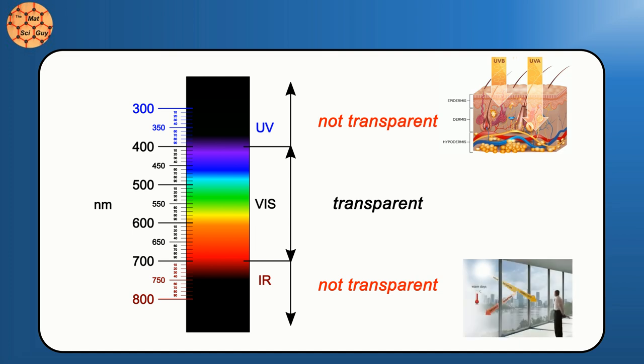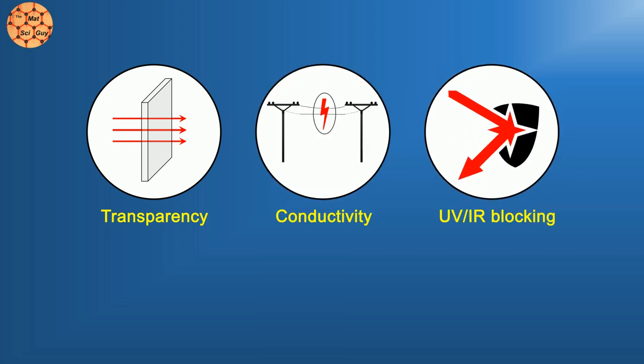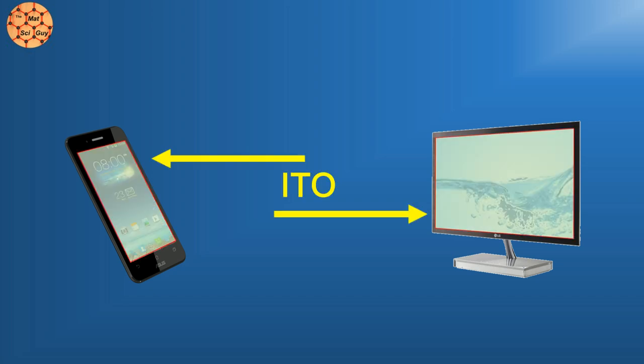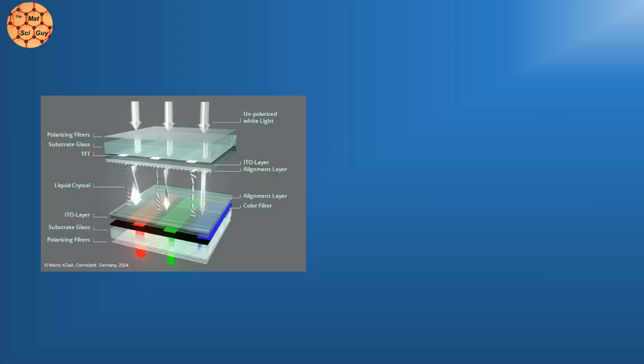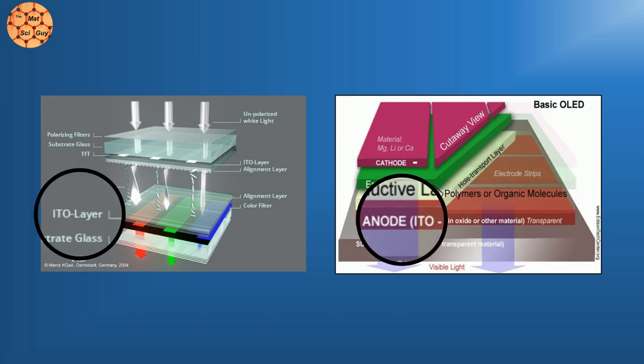The unique combination of properties, the transparency, the conductivity, and to a slightly lesser extent the UV and IR blocking properties, makes ITO common in a wide range of electronic applications. When I said in the intro that you're probably staring at ITO right now, it wasn't hyperbole. If you're watching this on any sort of smartphone or computer screen, there's probably an ITO layer in there. Whether it's a traditional LCD or a newer OLED screen, they both require a transparent conductor on their front surface.